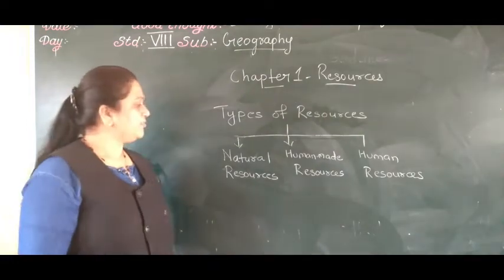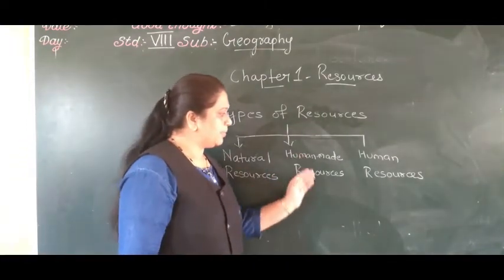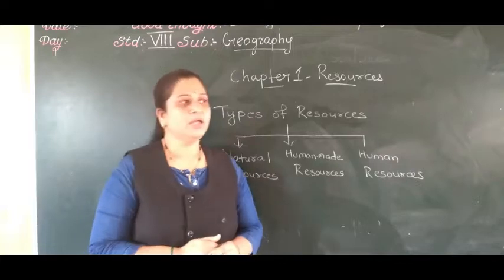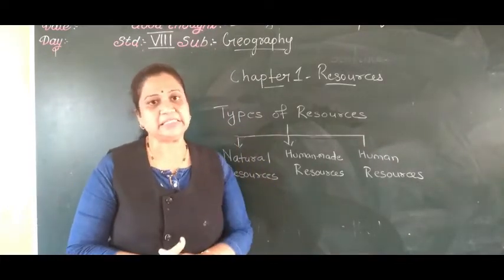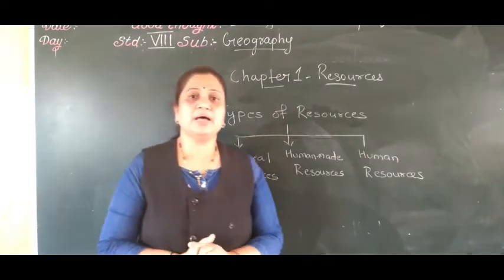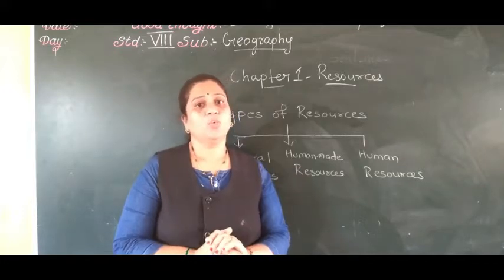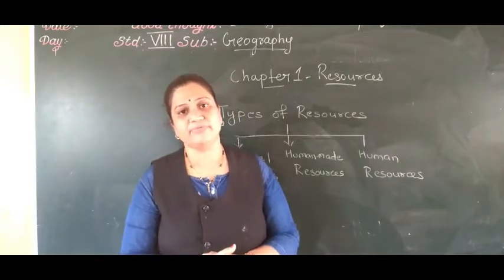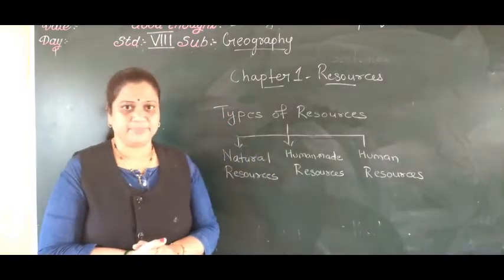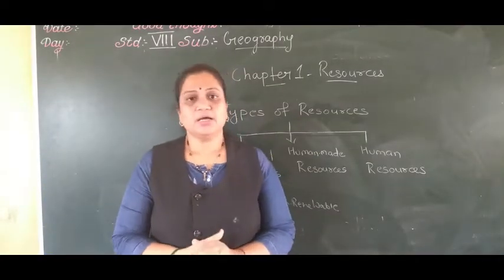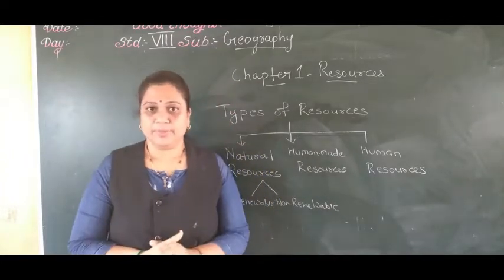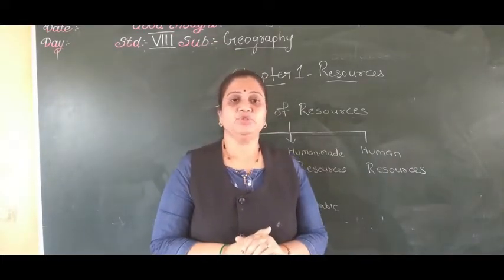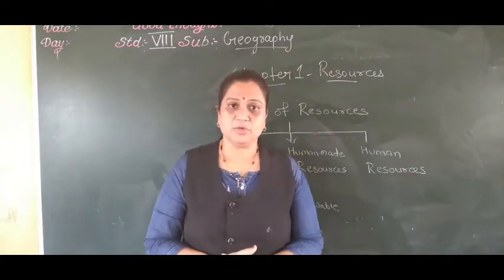The resources are classified into three categories: natural resources, human-made resources, and human resources. Natural resources are the resources which we get from nature without any modification. Some resources need modification, while others like air and water can be directly used by human beings. But some resources like minerals and iron ores have to be modified before we can make use of them.